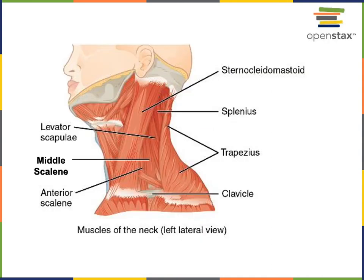We'll start getting oriented to the location of the superficial muscles in the cervical region. The sternocleidomastoid is a major muscle responsible for the action of flexing or rotating the cervical vertebrae — to flex the head at the neck, or if just one sternocleidomastoid contracts, it will cause rotation of the cervical vertebrae to rotate the head at the neck.